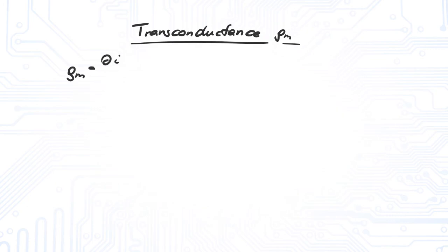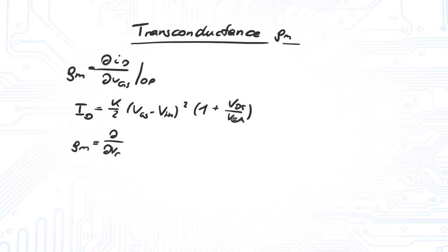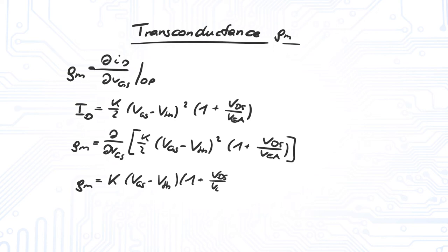The transconductance can be calculated easily. Let's assume we operate our MOSFET somewhere in the saturation region. We just substitute for the drain current and calculate the derivative with respect to VGS.